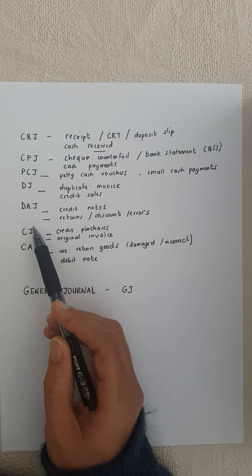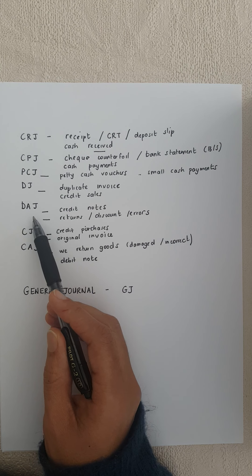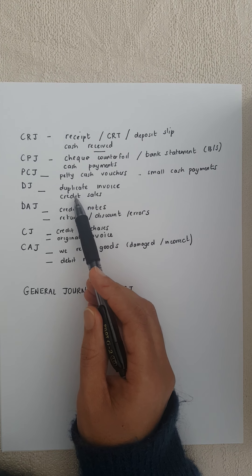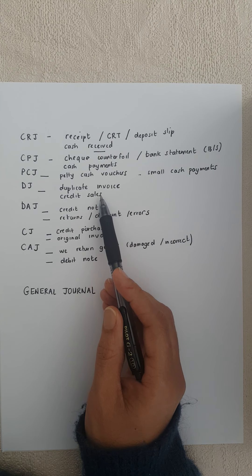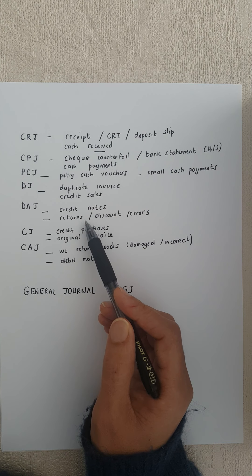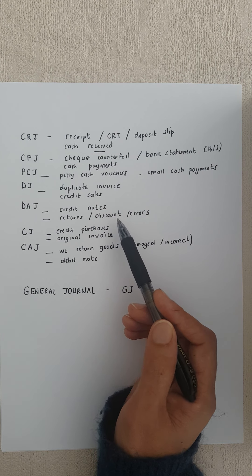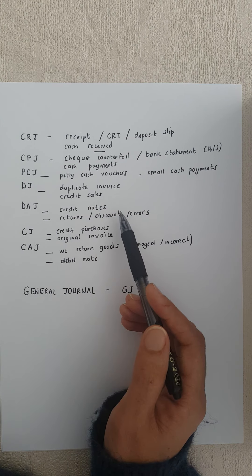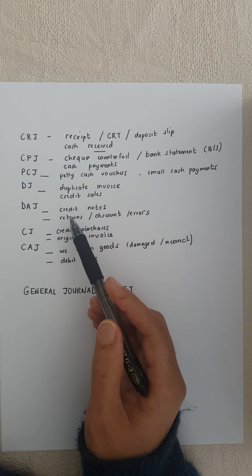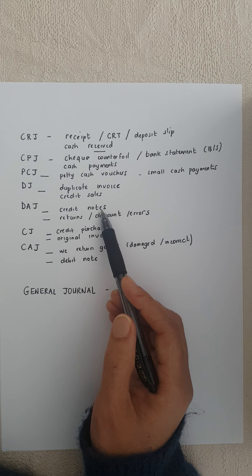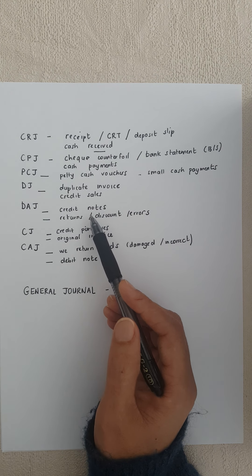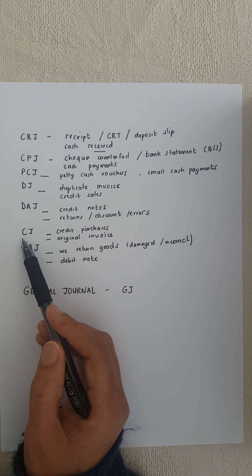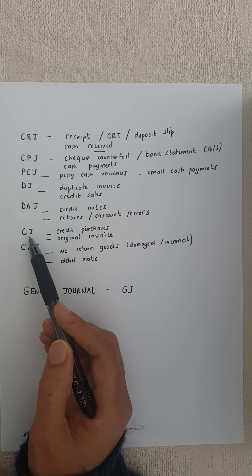Then we have our debtors allowance journal. The debtors have a problem with the goods and they return it to us, or they claim a discount, or there's an error on the invoice. We issue them a credit note and those goods are returned to us.